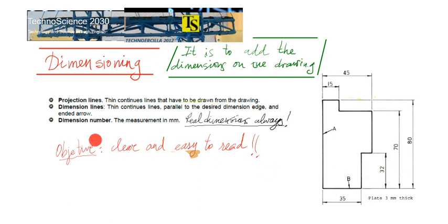Dimension lines are always parallel lines to the edge you want to dimension, to the line you want to dimension, and they have arrowheads at the end. Finally, dimension numbers are these numbers that are expressing in millimeters the real dimensions of the object. So these numbers are real, always, always real dimensions and they are always in millimeters.